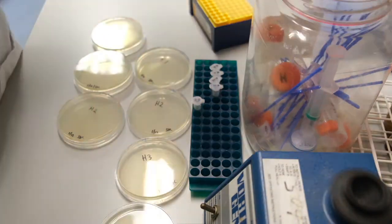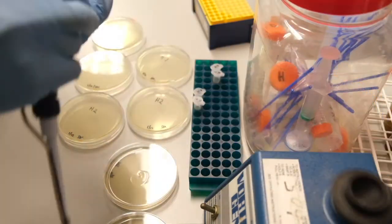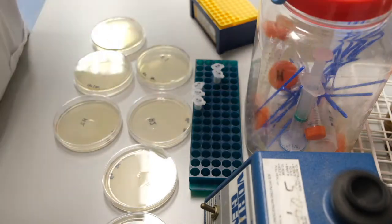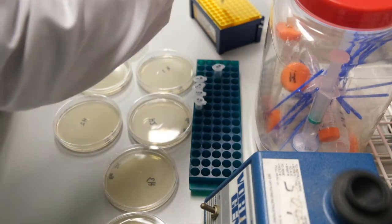In this speeded up footage, I pipette and then spread soil sample H dilutions onto GAUSE number two plates, both with nalidixic acid and without nalidixic acid.